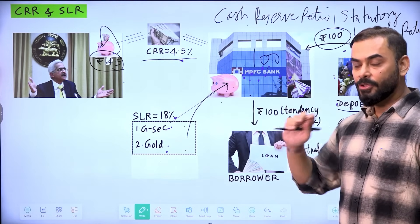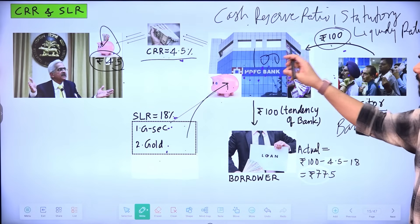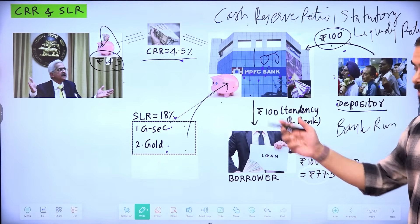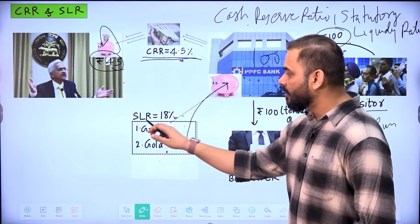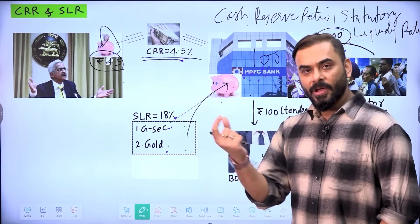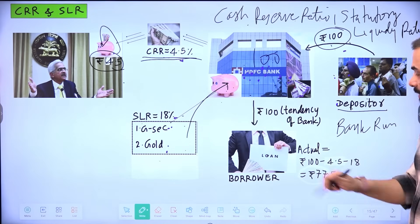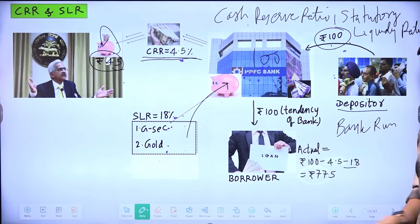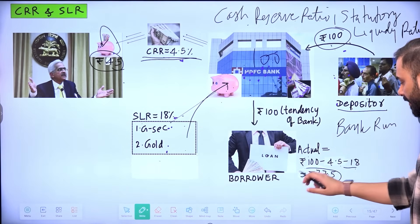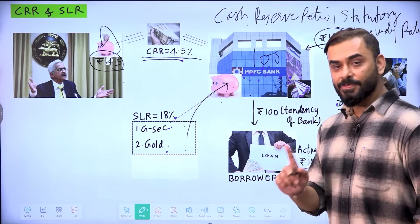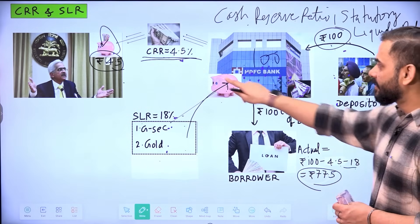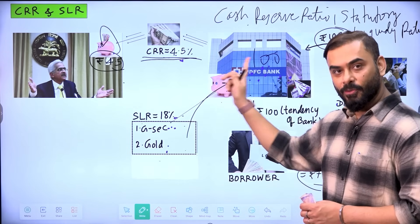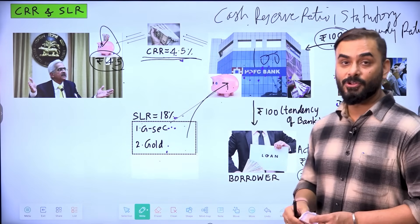So now, if you calculate something here that suppose 100 rupees are deposited in HDFC and I want to ask you a question that out of 100 rupees, when 4.5 rupees CRR and 18 rupees SLR is gone, how much is the loan giving capacity of this bank? So 100 minus 4.5 minus 18, this is the loan giving capacity. 100 minus 4.5 minus 18, which is 77.5. Which means if depositors deposit 100 rupees in this bank, this bank's 4.5 plus 18 rupees is gone. Only 77 rupees can be given as loan, which is safe.